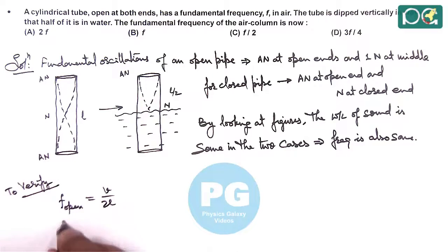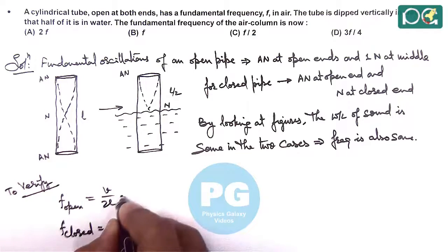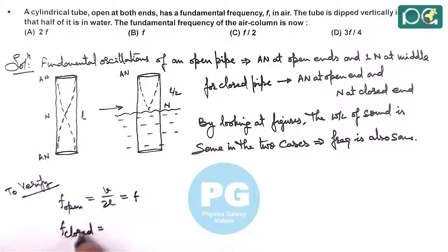And fundamental frequency of closed pipe, we can write, this is already given to us as F. For closed pipe, it is given as V by 4L.